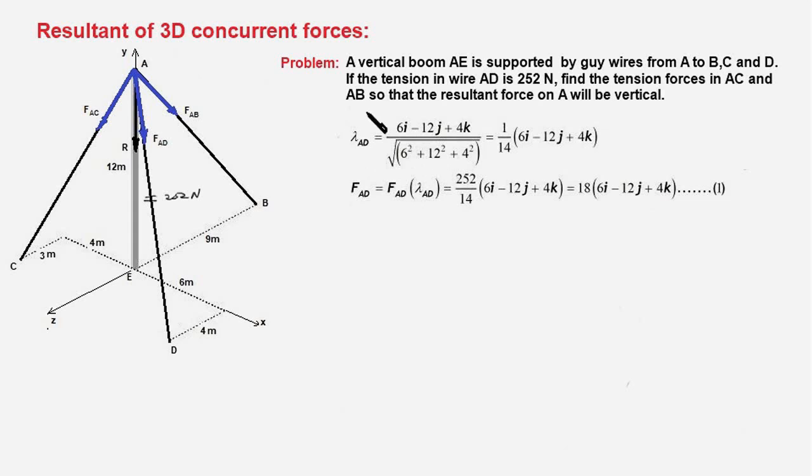In other words, this is AD upon the magnitude of AD. And to find out the position vector AD, we walk from A to D and figure out how many units of X, Y, and Z coordinates undergo change. So we go down by 12 units along minus Y axis, 6 units along positive X axis,